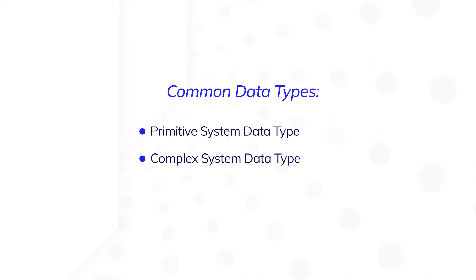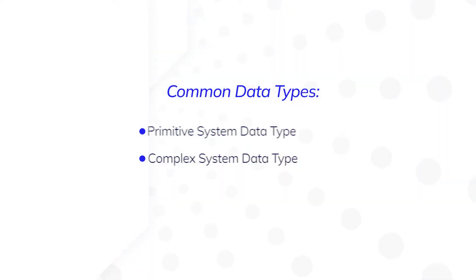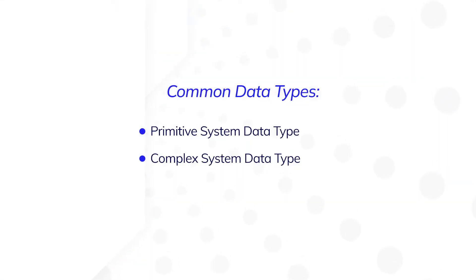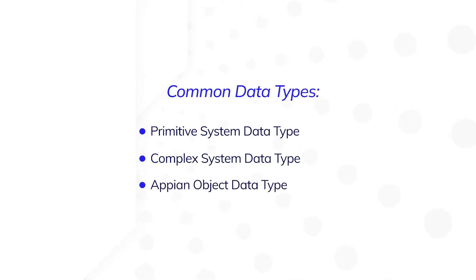Complex data types combine multiple primitive data types into a data structure. An example of a complex data type in Appian is the process info data type, which holds information about a running process. In addition to primitive and complex data types, you will also work with Appian object data types such as users and record types.